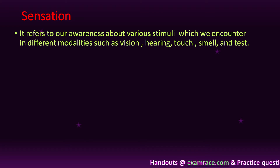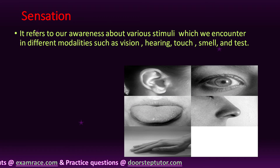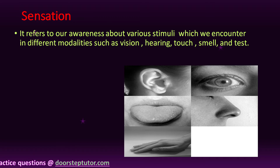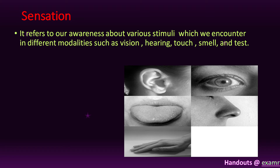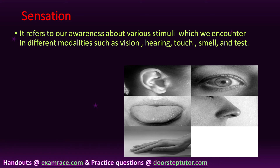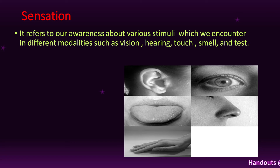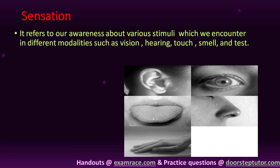The first type is sensation. Sensation refers to our awareness of various stimuli which we encounter in different modalities such as vision, hearing, touch, smell, and taste. When we get information through our sense organs and that message is sent to our brain, that is called sensation. Sensation is related to cognition and helps us understand the world.